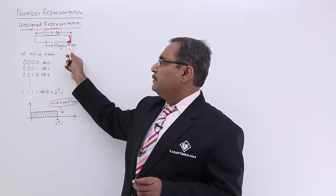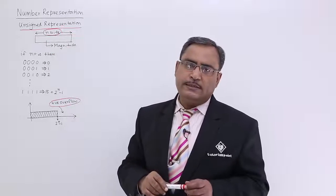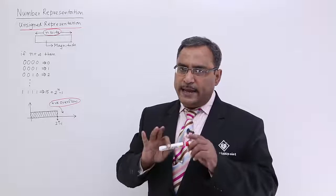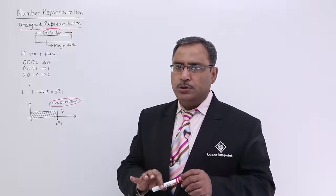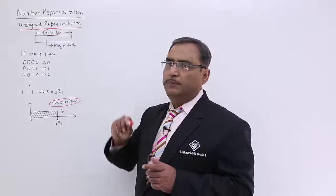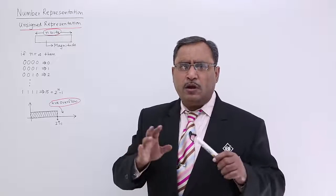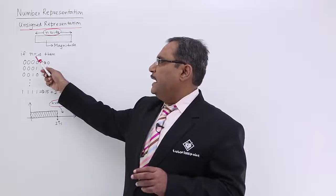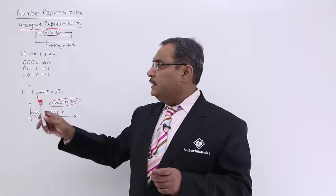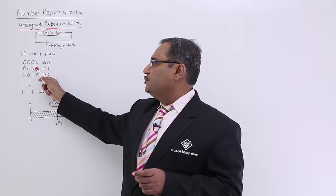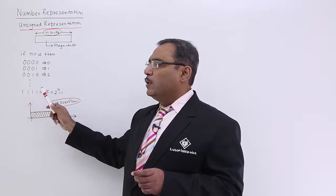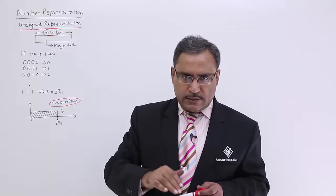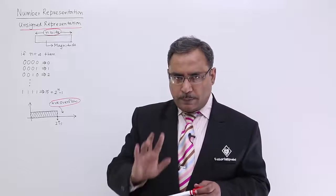Let us suppose there is a particular number which is having n number of bits, and all these n bits are used to represent the magnitude part of the number. Let us suppose I am taking a very small value for n. Let it be n equals 4.